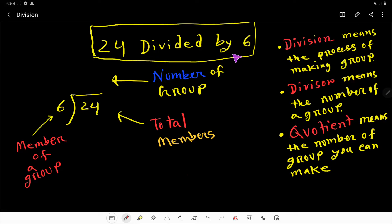24 divided by 6. Okay, so if I translate this expression then I have to write like this: 24 divided by 6. This divided by means division sign, right? So if I want to divide 24 by 6...